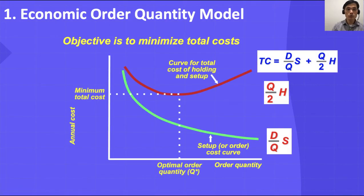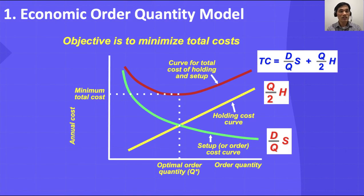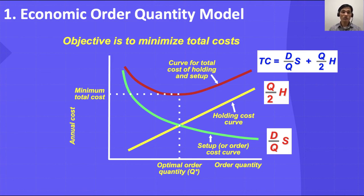The first model we want to look at is the Economic Order Quantity model, or EOQ model. The EOQ model assumes that there are two large portions of cost: the first one is holding cost and the second is setup cost. Holding cost increases as the order quantity increases and is represented by Q over 2 times H.